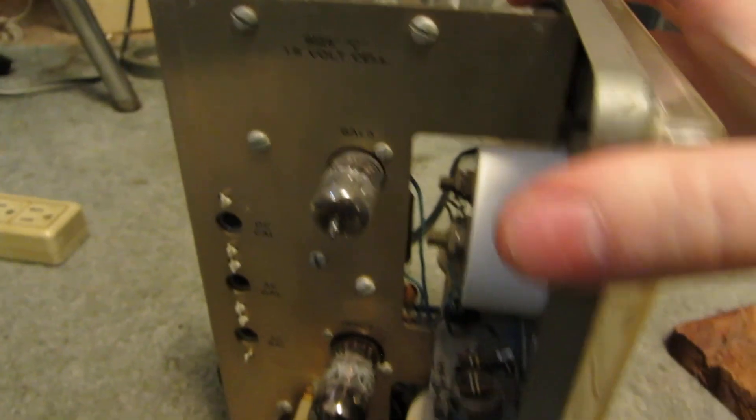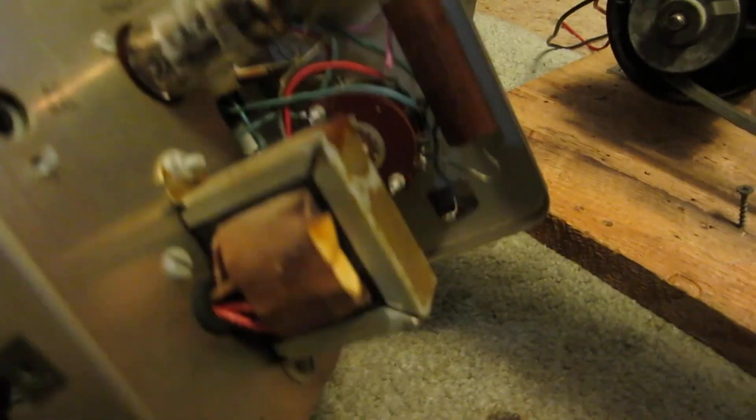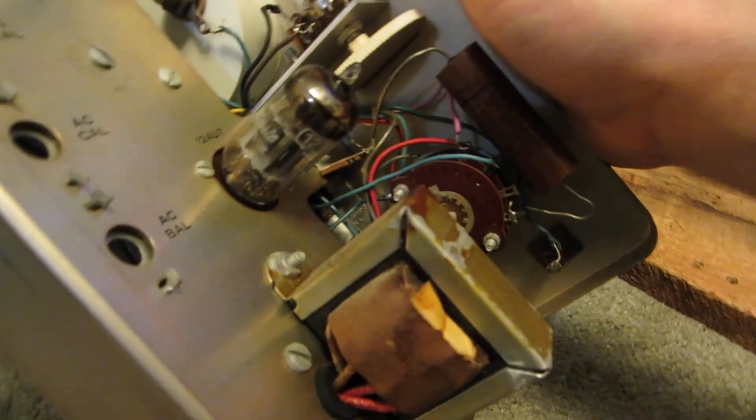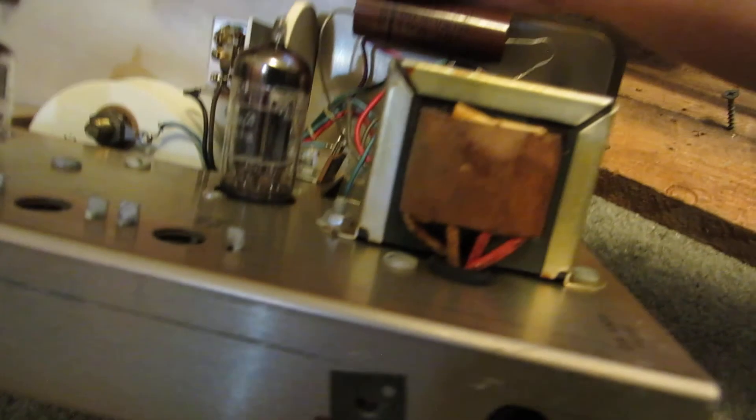Just like the other one, it is vacuum tubes and it's got a 12AU7 and a 6AL5. These are all vacuum tube multimeters and their internals are built very similar to each other. So, they all do the same thing.